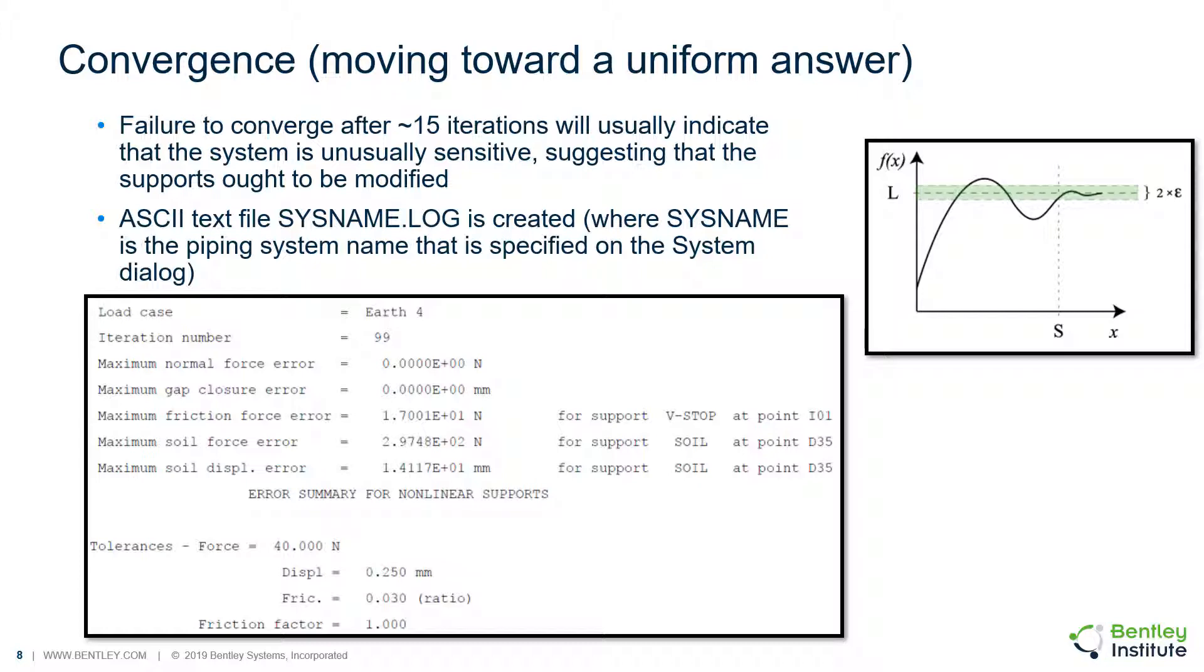If the analysis does not converge after your set number of maximum iterations, a dialog will appear that will ask you if you want to continue iterating. Clicking yes will basically continue iterating for another set number of maximum iterations, so you can see how close your model was to converging, or you can click no, saying that you do not want to continue.